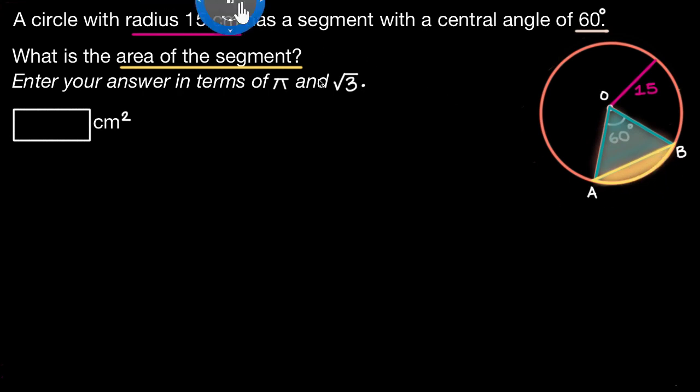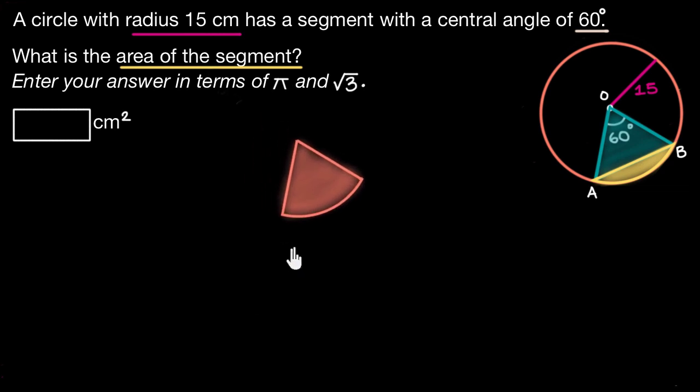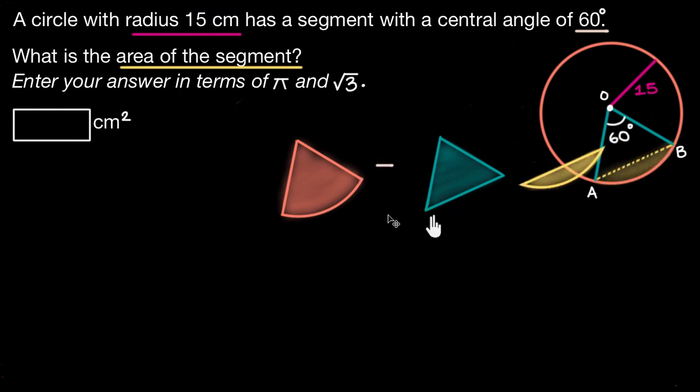So let me write this out clearly for you. If I have my sector over here and if I subtract my triangle from this sector, I will be left with the area of my segment right over here. So why don't you go ahead and figure out the individual areas of this sector and the triangle and do this on your own.